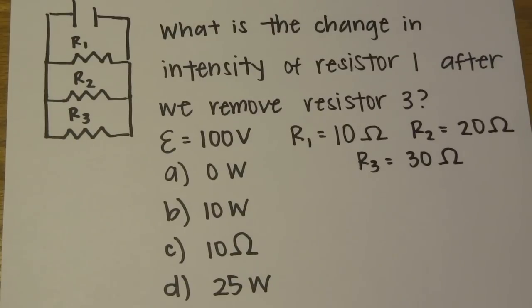Today we have a physics question of the day. This is a resistor problem. The question asks, what is the change in intensity of resistor 1 after we remove resistor 3? The voltage of the battery is 100 volts, the resistance of resistor 1 is 10 ohms, resistor 2 is 20 ohms, and resistor 3 is 30 ohms.